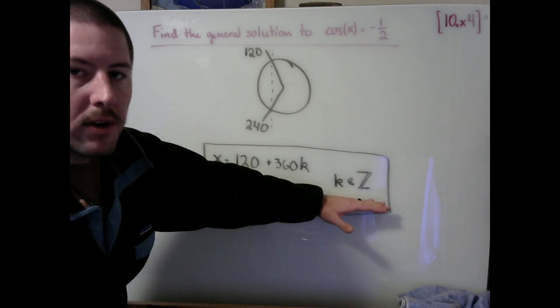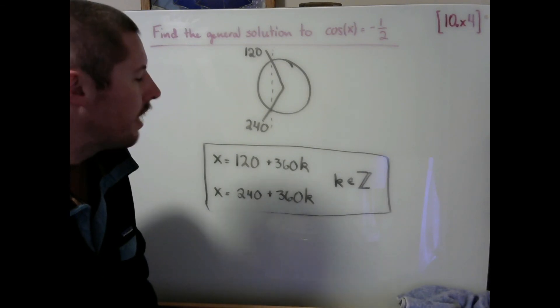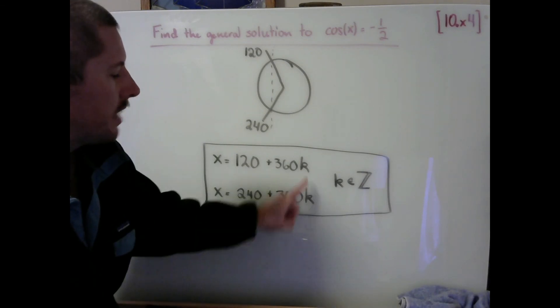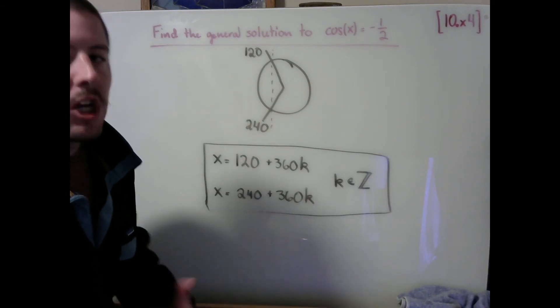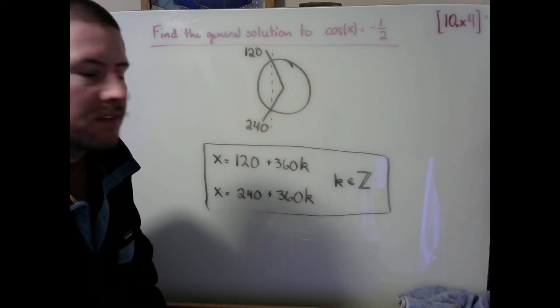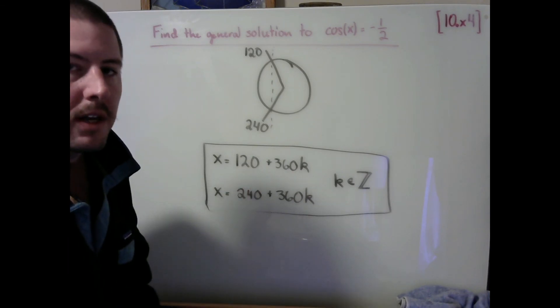So very often K is used to indicate any number of additional revolutions. This K is handling all of our coterminal angles for us—any number of additional revolutions that land us at the same locations as 120 and 240.